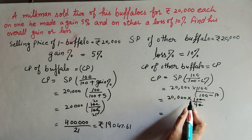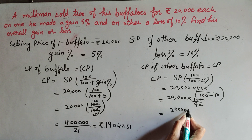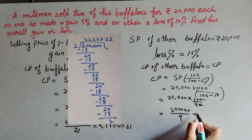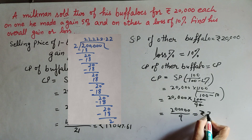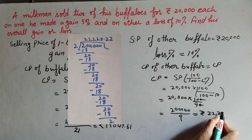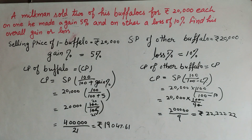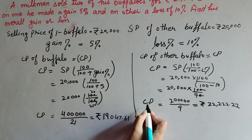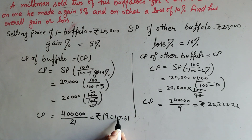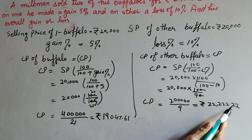After cancellation: 20,000 × 10 = 2,00,000 over 9. Dividing 2,00,000 by 9 gives us 22,222.22. So the cost price of the first buffalo is rupees 19,047.61 and the cost price of the second buffalo is rupees 22,222.22.